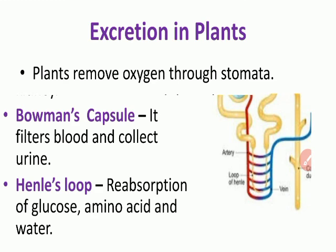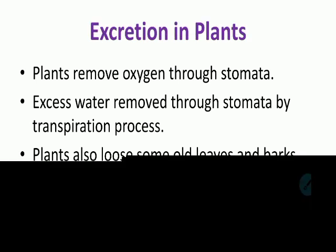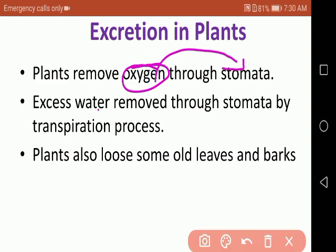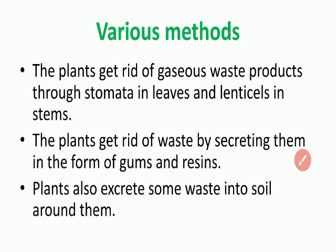Excretion in plants: plants remove oxygen (a waste product for them) through stomata. Excess water is also removed through stomata by the transpiration process. Plants also lose some old leaves and bark — yellowed old leaves are waste materials that fall off, and old bark is also shed.